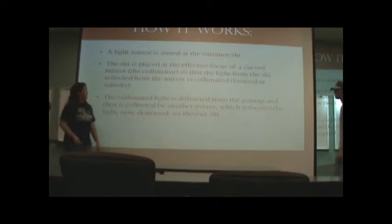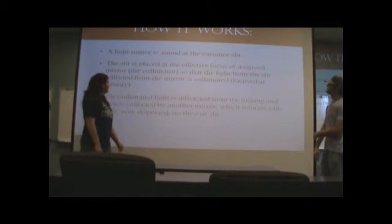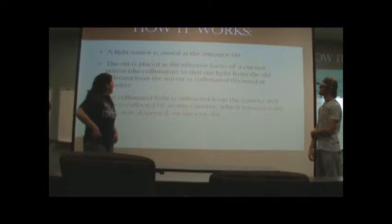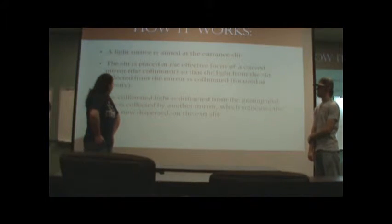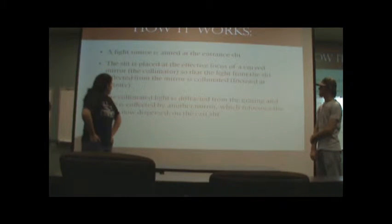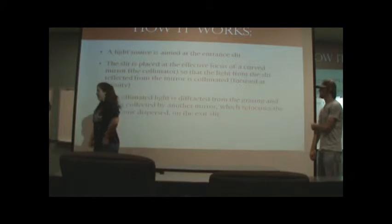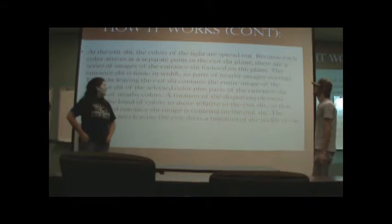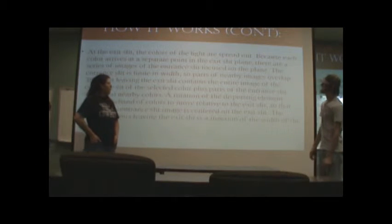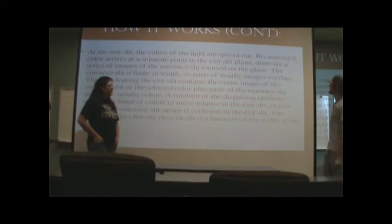A little bit more in detail about how it works. A light source is aimed at the entrance slit. The slit is placed at the effective focus of a curved mirror, which is the collimator, so that the light from the slit reflected from the mirror is collimated or focused at infinity. The collimated light is diffracted from the grating and then is collected by another mirror, which refocuses the light, now dispersed on the exit slit. And at the exit slit, the colors of the light are spread out because each color arrives at a separate point in the exit slit plane.